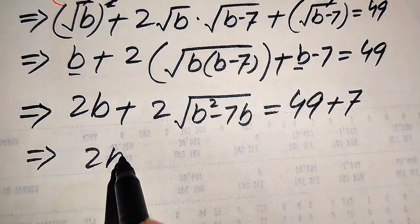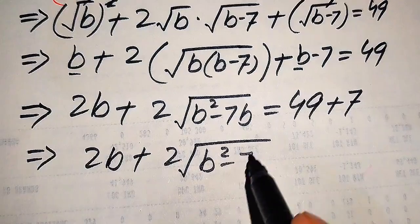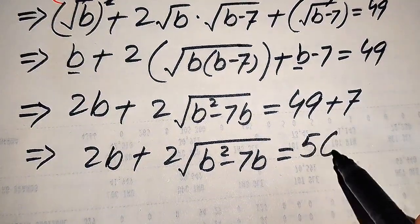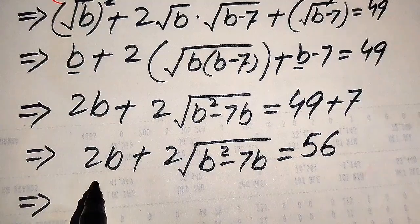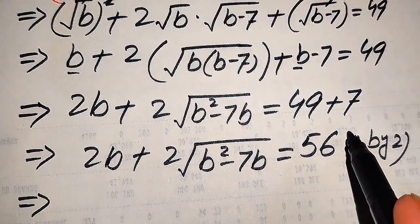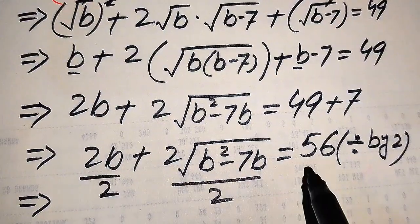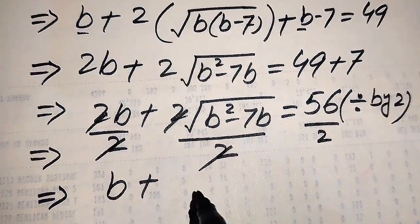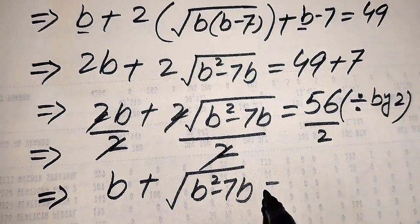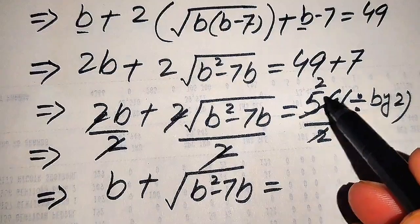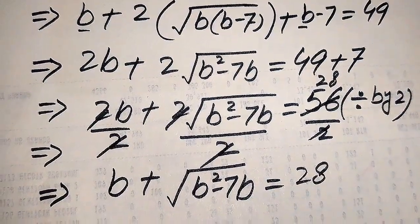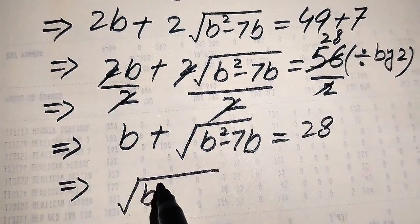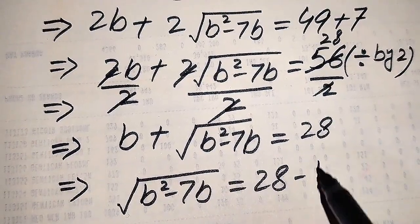So we have 2b + 2·√(b²−7b) equals 56. We divide both sides by 2 — the 2b divided by 2 and the radical term divided by 2 — and we get: b + √(b²−7b) = 28. Now we move b to the right hand side, giving us: √(b²−7b) = 28 − b.